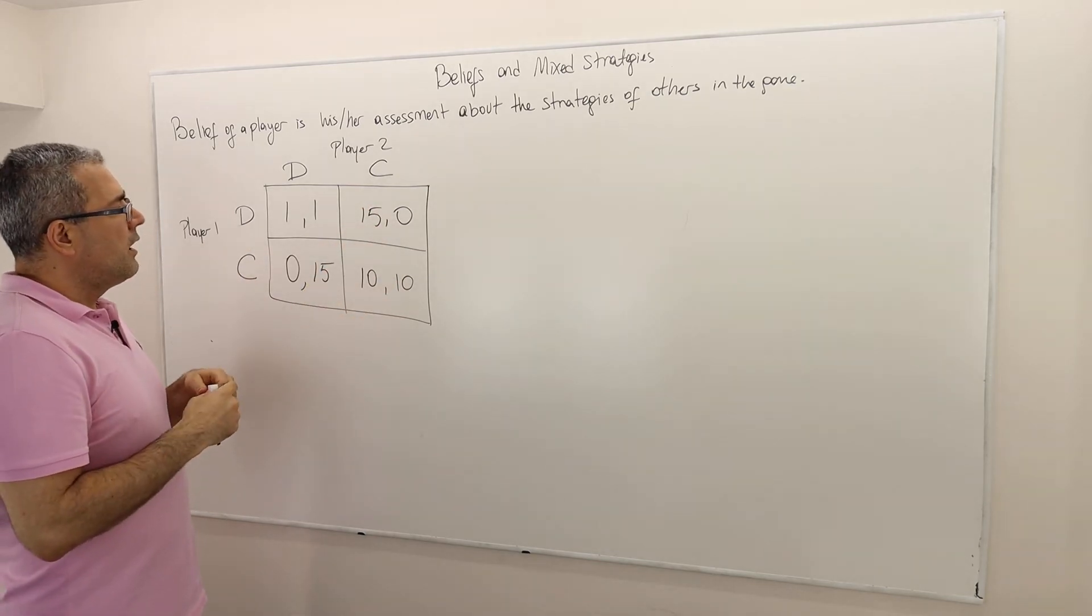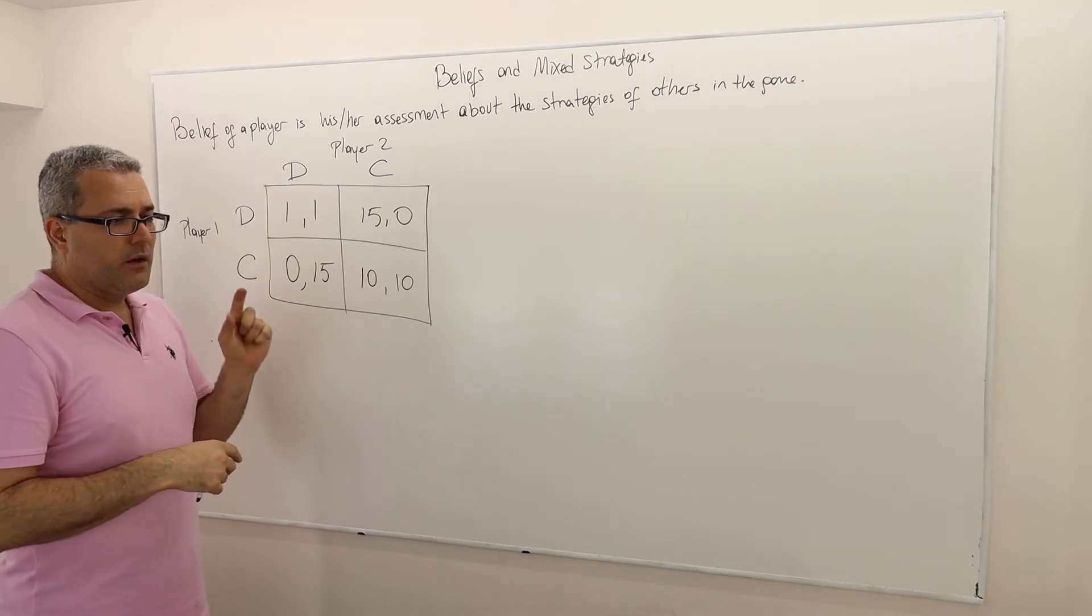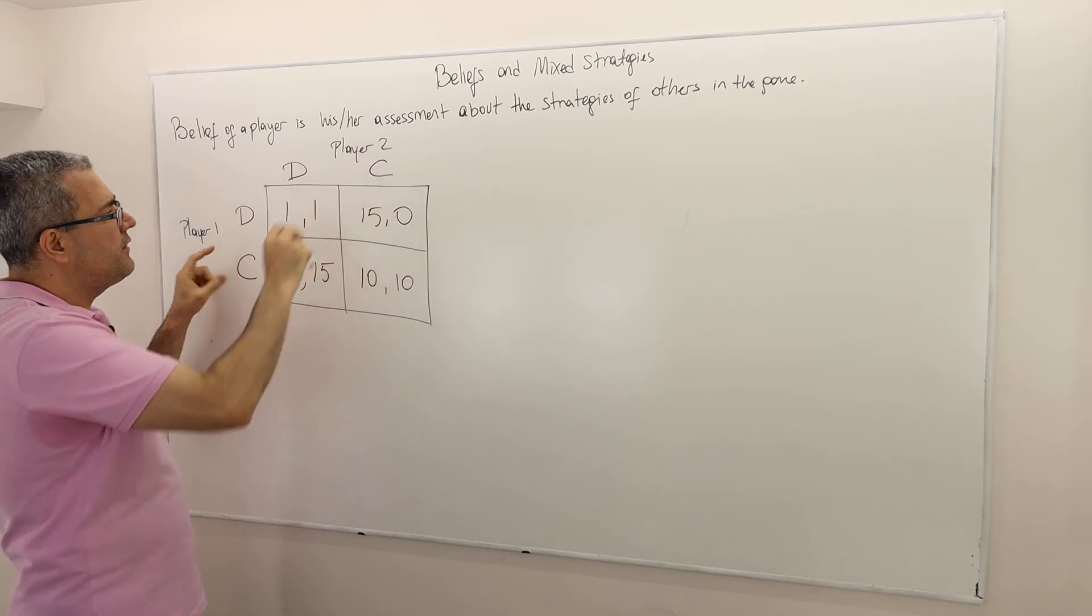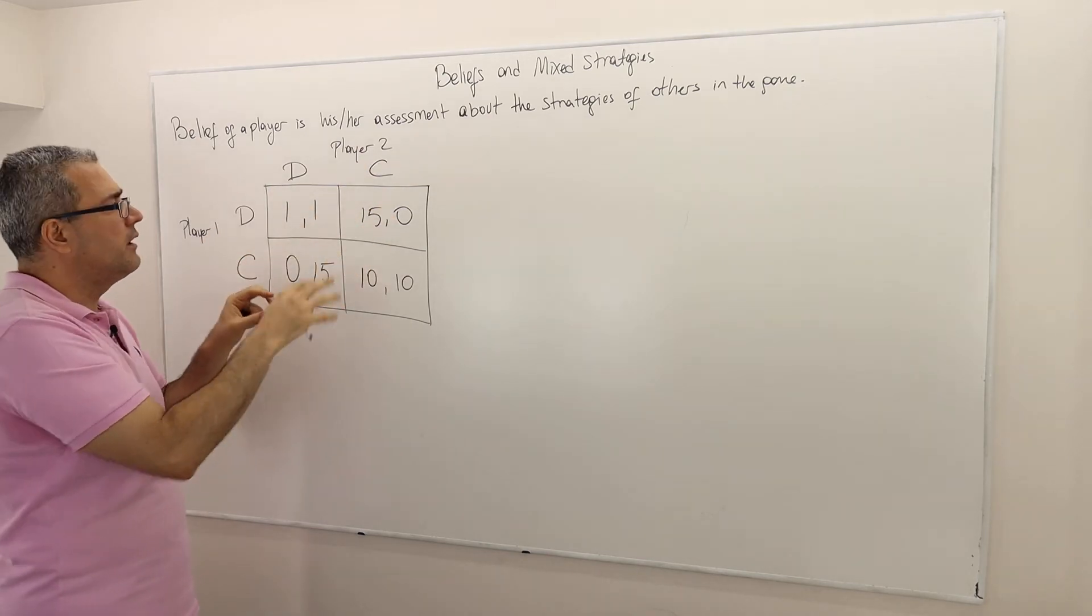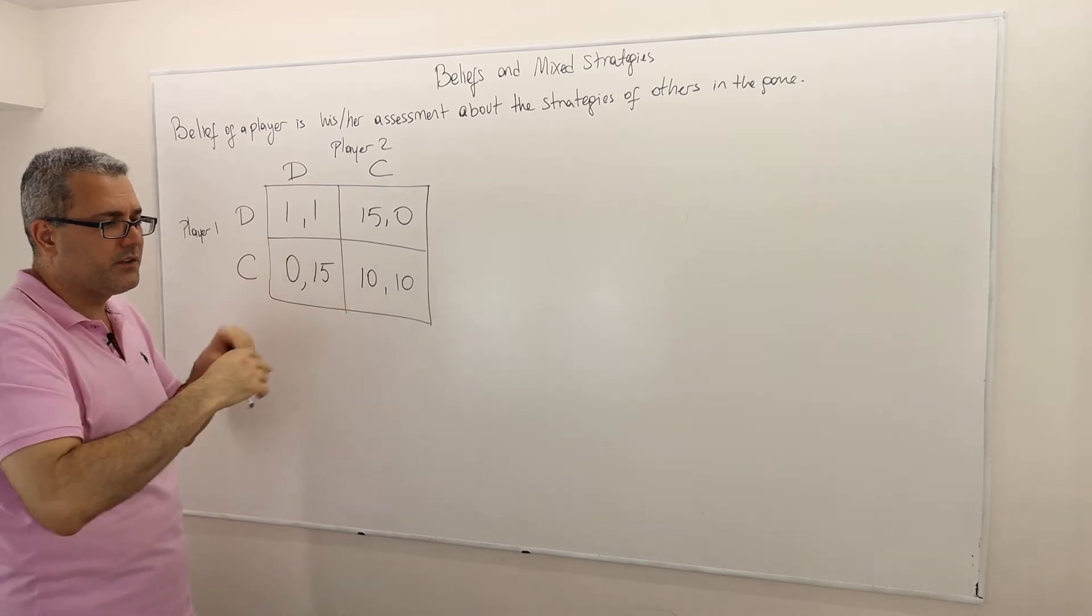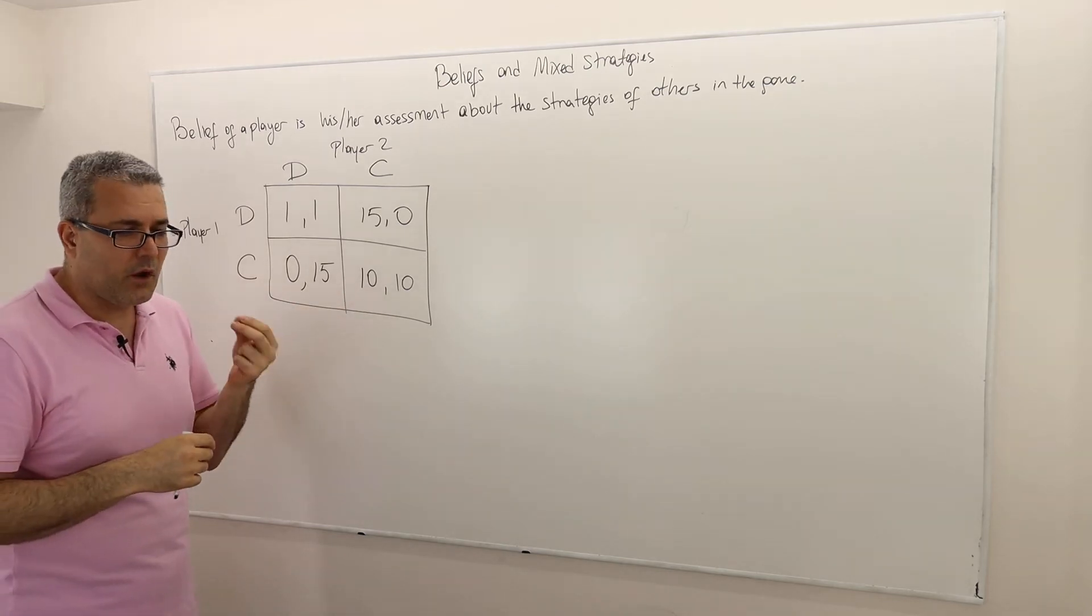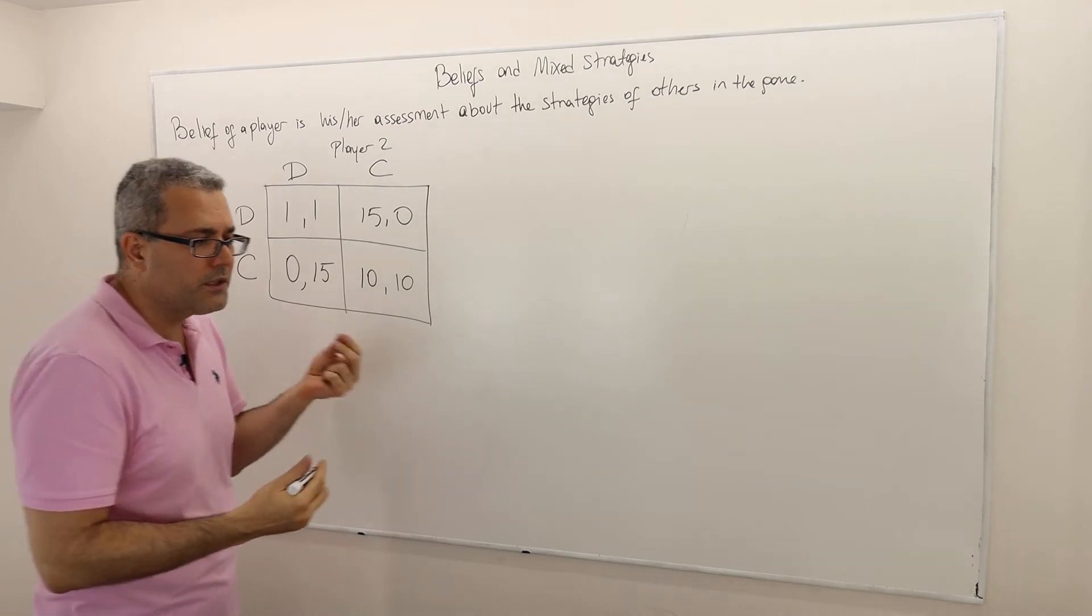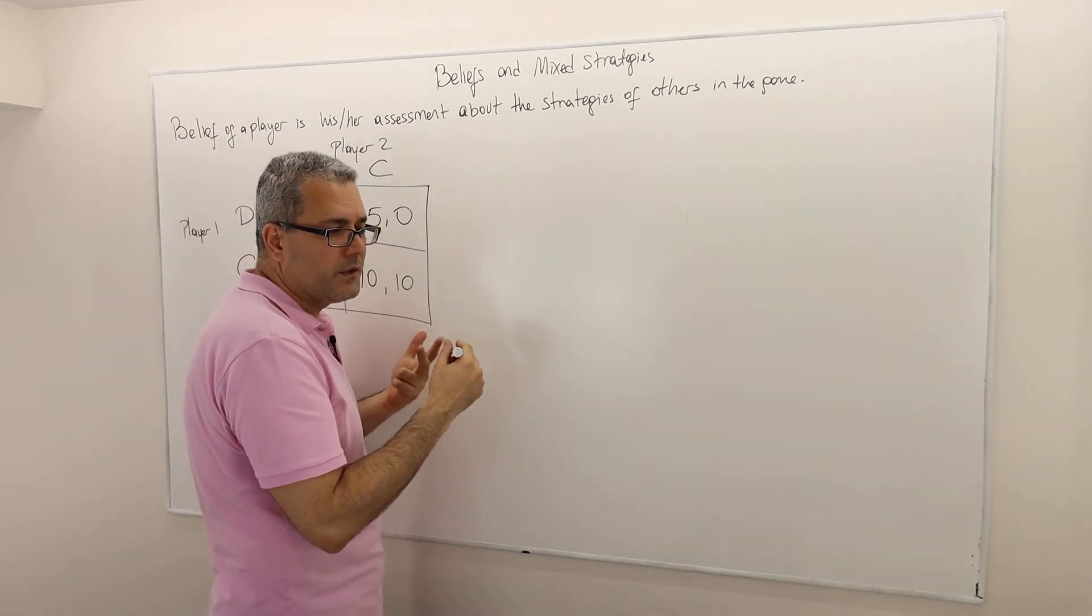So these are the jail times by the way. So what about the utility? I mean these are the strategies, these are the outcomes: 15 years jail, 0 years in jail, 10 years in jail, etc. Well what about the preferences? Obviously nobody wants to spend too much time in jail. So let's suppose the utility function is the following.